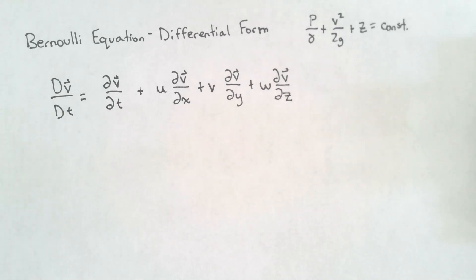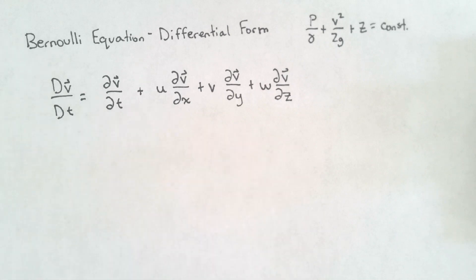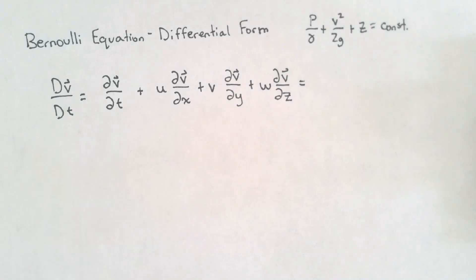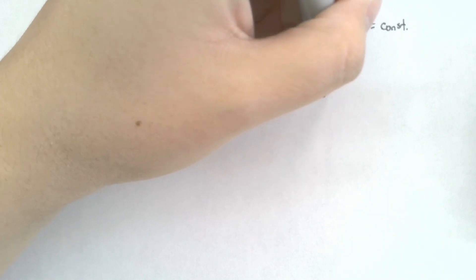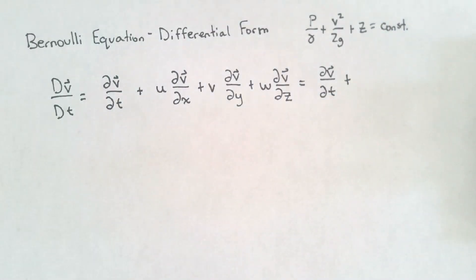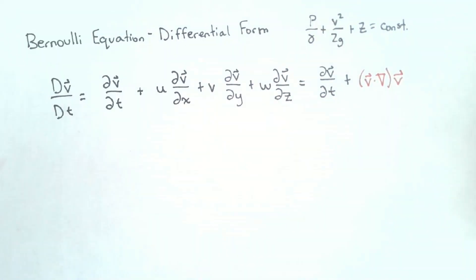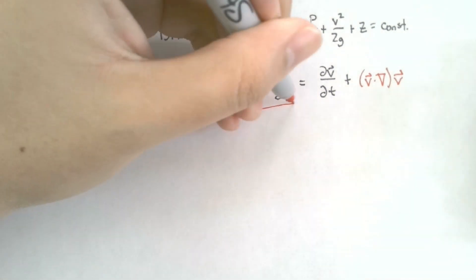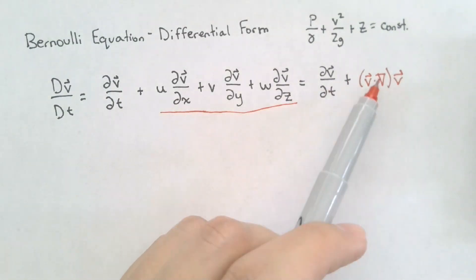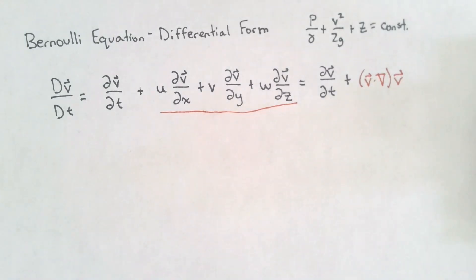In order to do that, let's recall the following. The material derivative of the velocity is equal to the local change in velocity plus the convective change in velocity. However, when we study the del operator, we notice that the convective change in velocity can actually be written as a function of the del operator. That means the material derivative can be expressed as the local change in velocity plus the convective change expressed as velocity dot del operator applied to the velocity vector. If we can express this term and apply it into Euler's equation, we may be able to use some vector identities to simplify Euler's equation and express it in a way that is more similar to the Bernoulli equation.